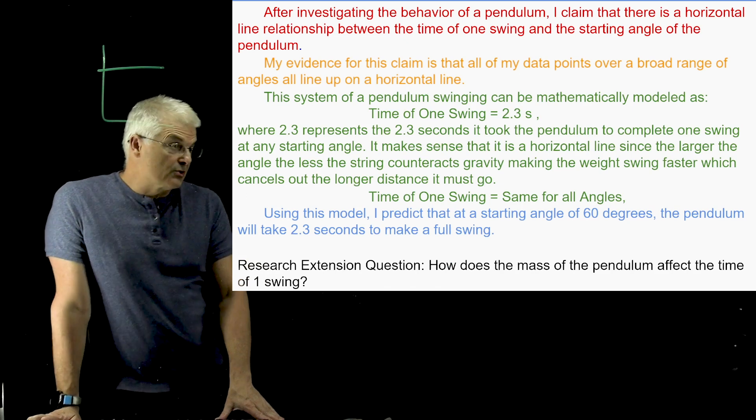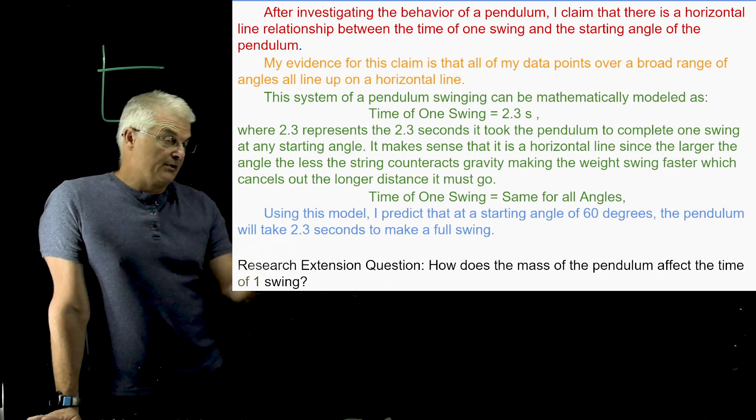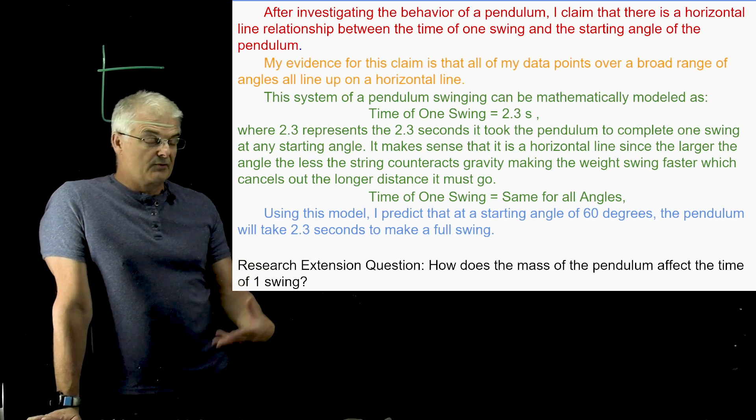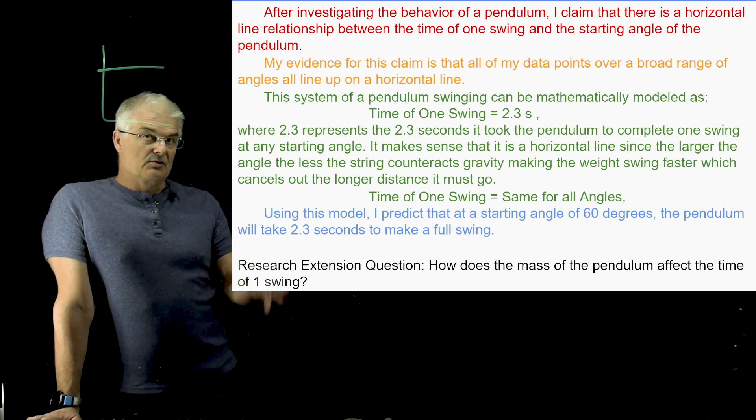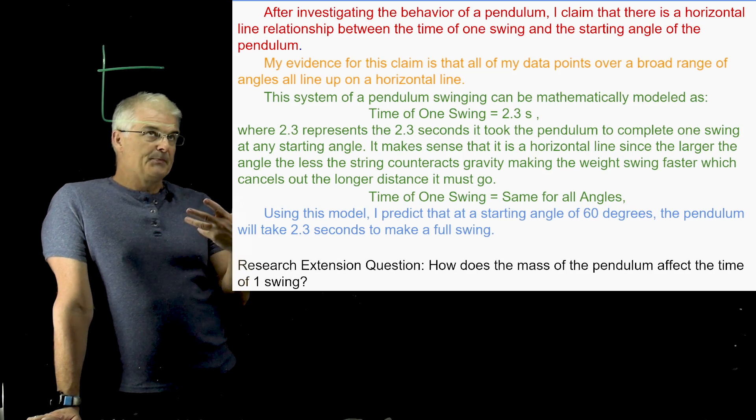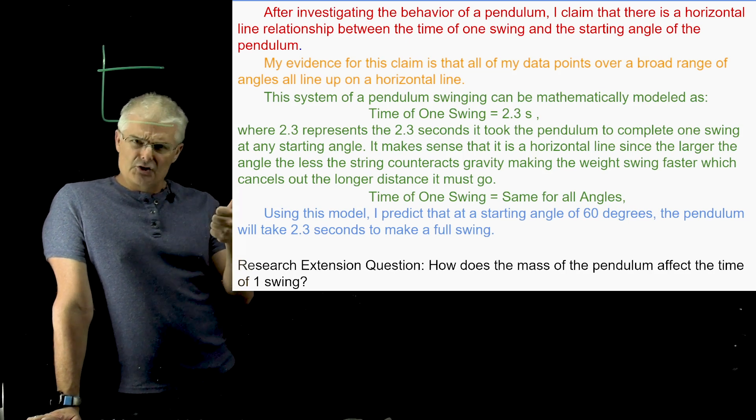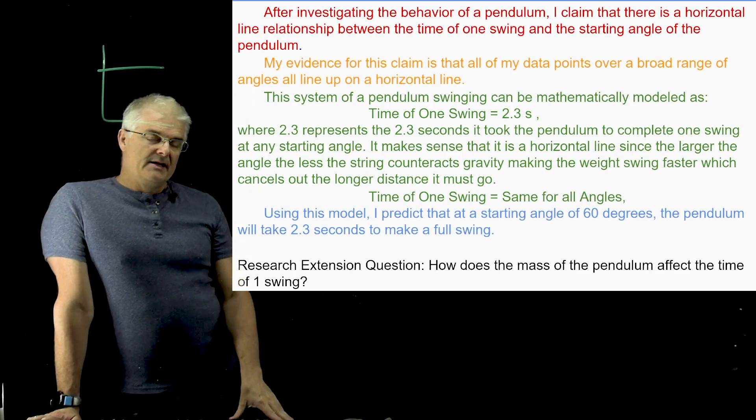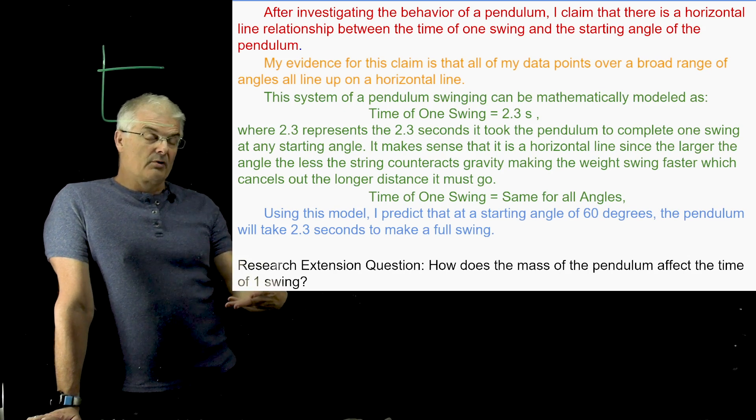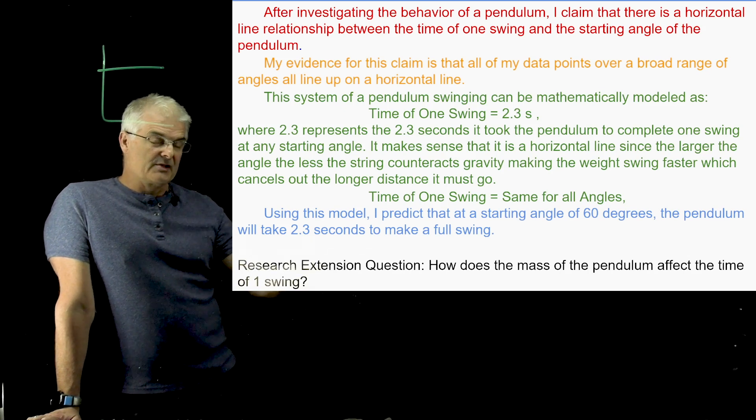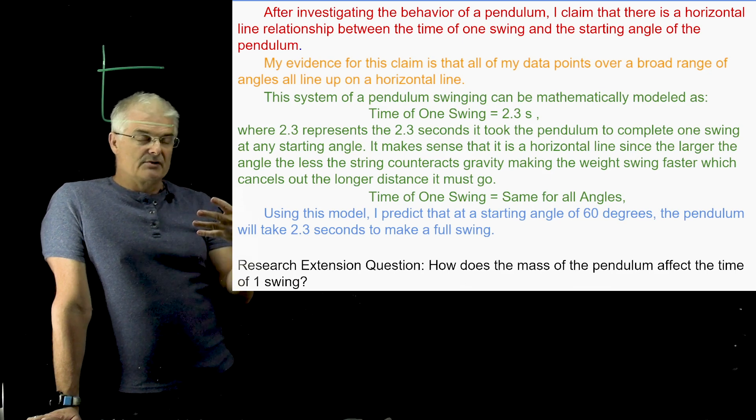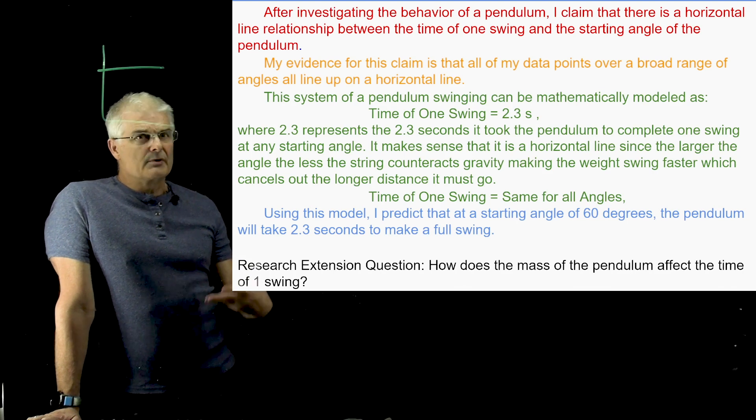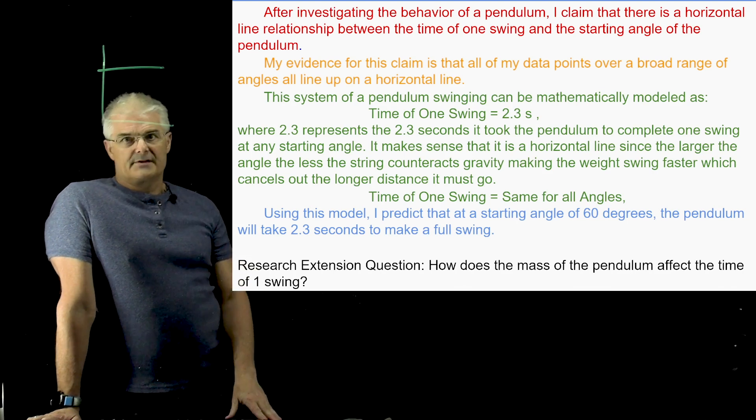And then the last thing you want to do is you want to have a research extension. And this is just one. There's no right answer on this one. It's how does the mass of the pendulum affect the time of one swing. So, if you would change the mass, that could be an extension that you can do. So, this is an exemplary, super awesome conclusion. See the different parts of a conclusion that you want to have in all your conclusions. So, as you go forward, we're going to investigate lots of different models. I want you to use this pattern to write out your conclusions. I'll be grading these carefully because it's important to really understand and be thinking like a scientist.